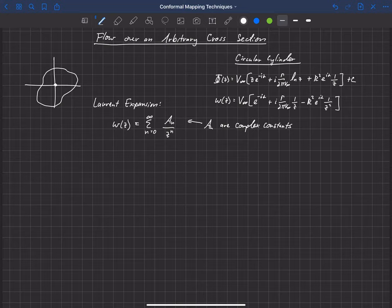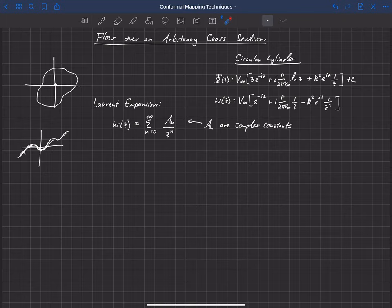Maybe I should just show that this Laurent expansion is similar to a Taylor series expansion. We can expand a Taylor series about the origin and match a function. The more terms we include, the better it will match that function. And so in a similar way, the more terms we include in this Laurent expansion for our complex velocity, the better we're going to be able to match the external geometry.